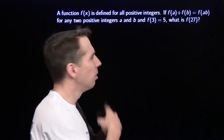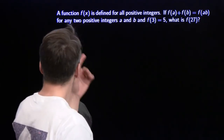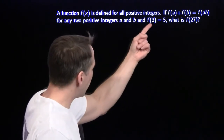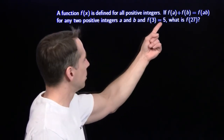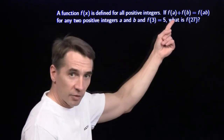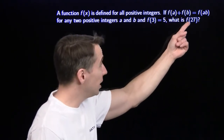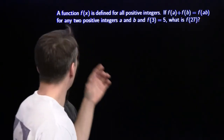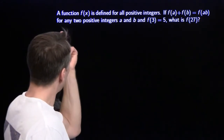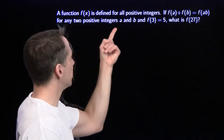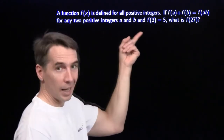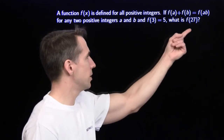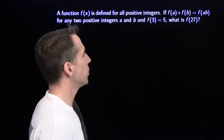A function f is defined for all positive integers. If f(a) plus f(b) equals f of the product of a and b, for any two positive integers a and b, and f(3) equals 5, then what is f(27)?